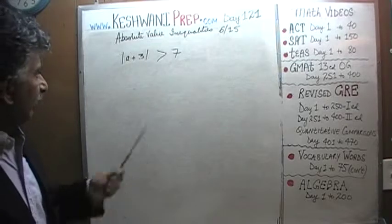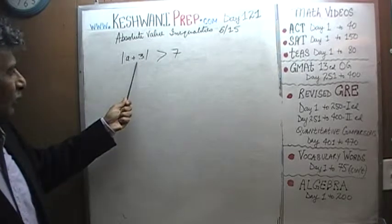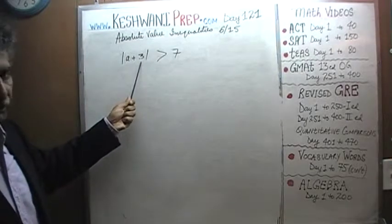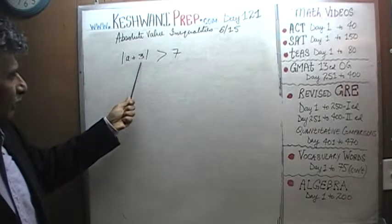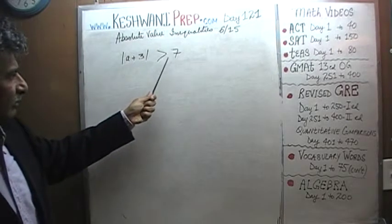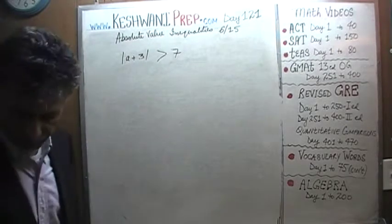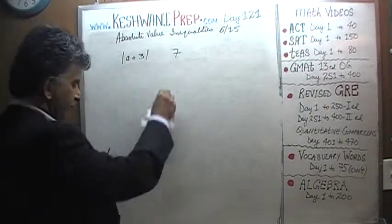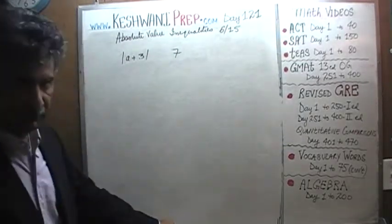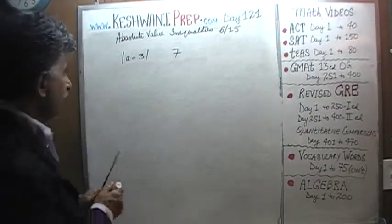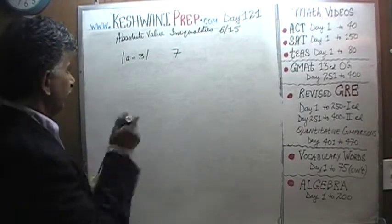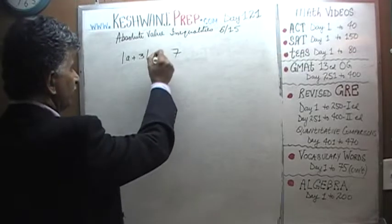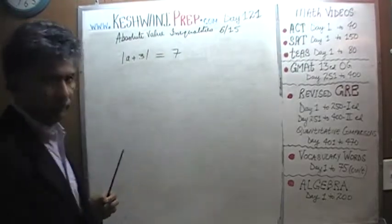Here is the problem. We are told that the absolute value of a plus 3 has to be greater than 7. Before we worry about greater than 7, let's ask ourselves what we are dealing with if it has to be equal to 7.